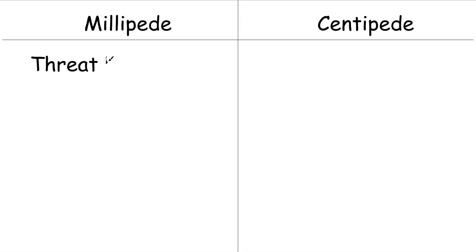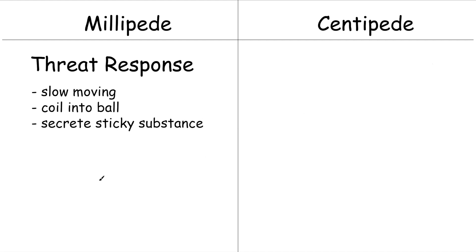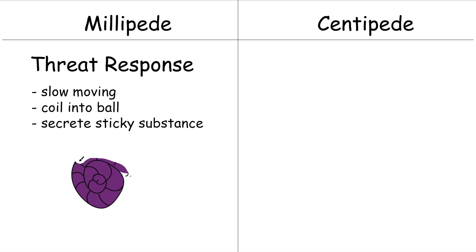Finally, the manner in which each species responds to threats and moves about differs. Millipedes are slow moving, and when threatened tend to coil up. Some can secrete a sticky substance as a defense mechanism.